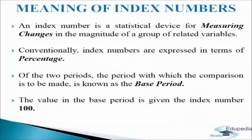Thus, an index number is a statistical device for measuring relative changes in the magnitude of a group of related variables over time. Conventionally, index numbers are expressed in terms of percentage. Index numbers measure the change with respect to time, geographical location, or some other characteristic. The comparison may be between categories such as persons, schools, hospitals, etc. It also measures changes in variables like prices of specified commodities, volume of production in different sectors of an industry, production of various agricultural crops, cost of living, etc.